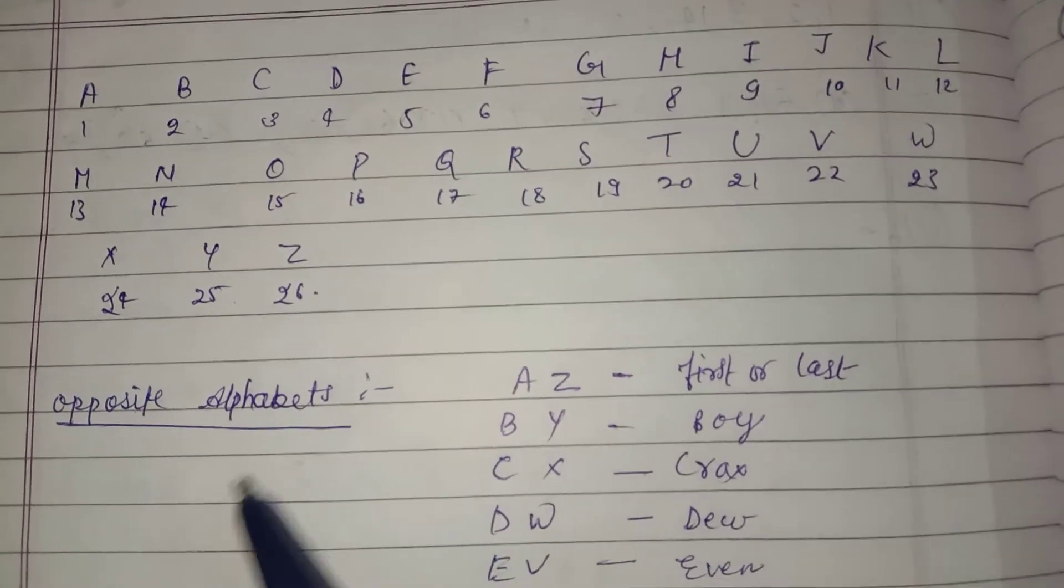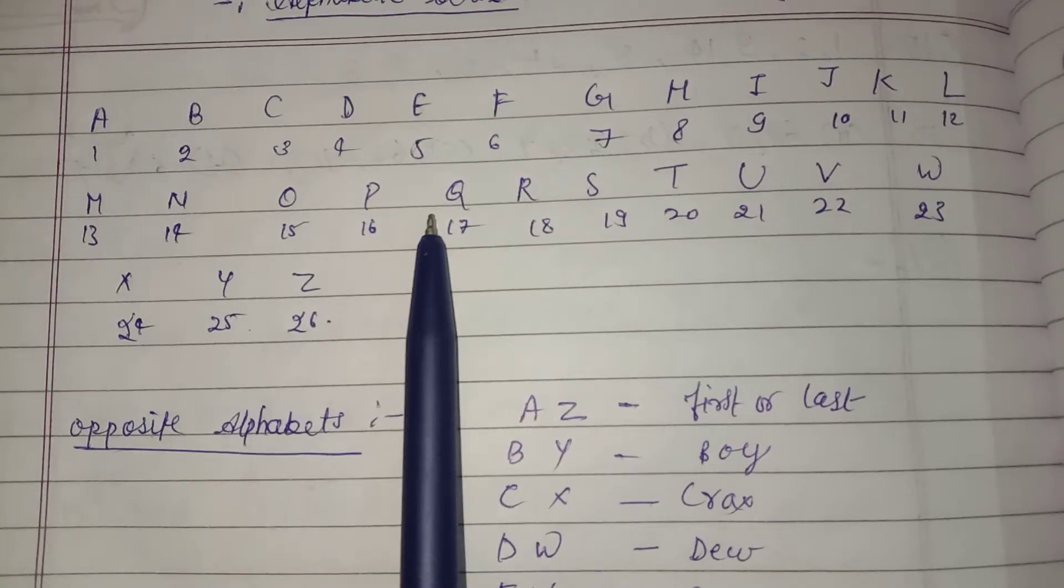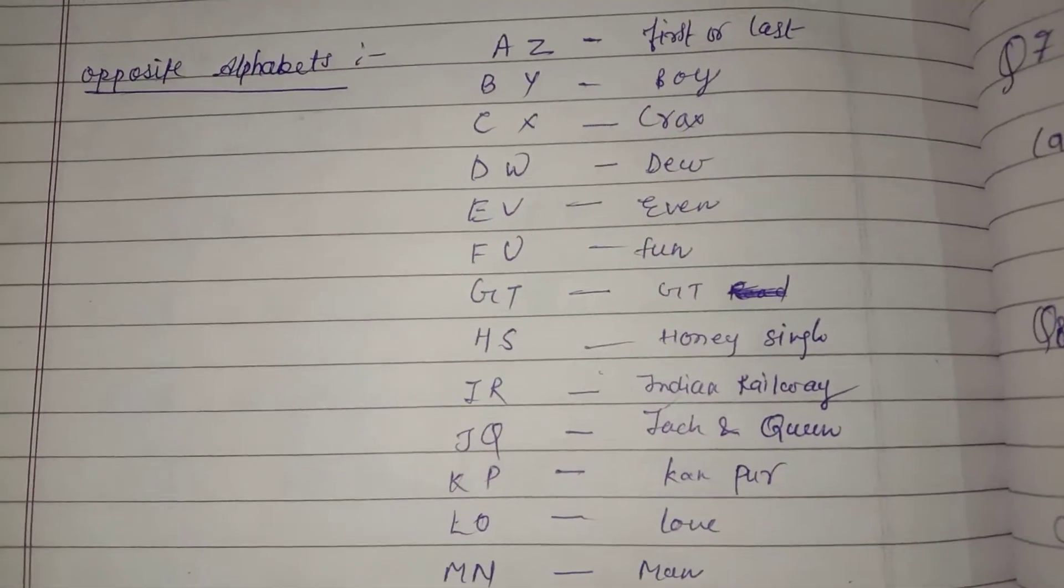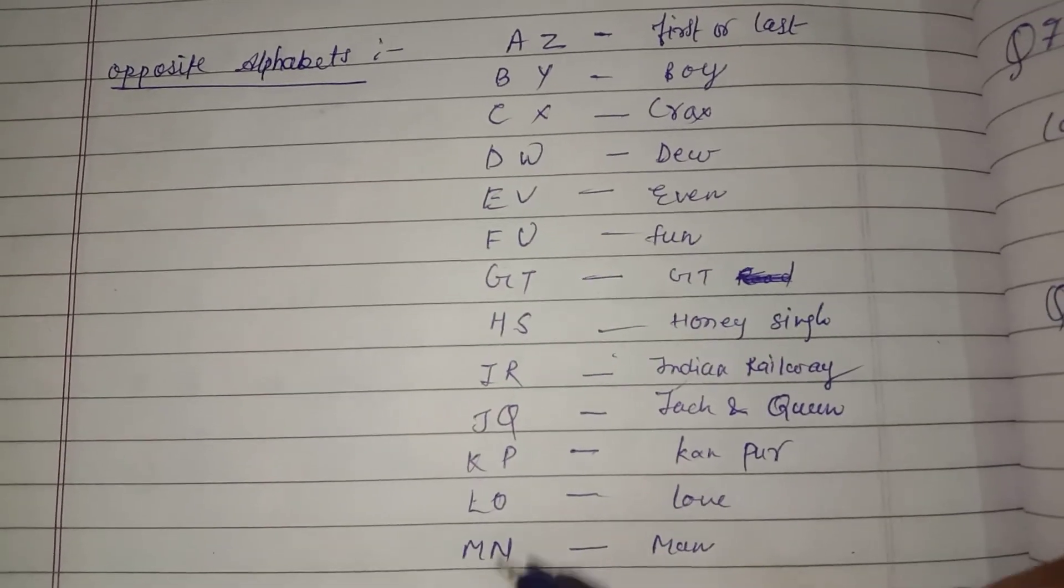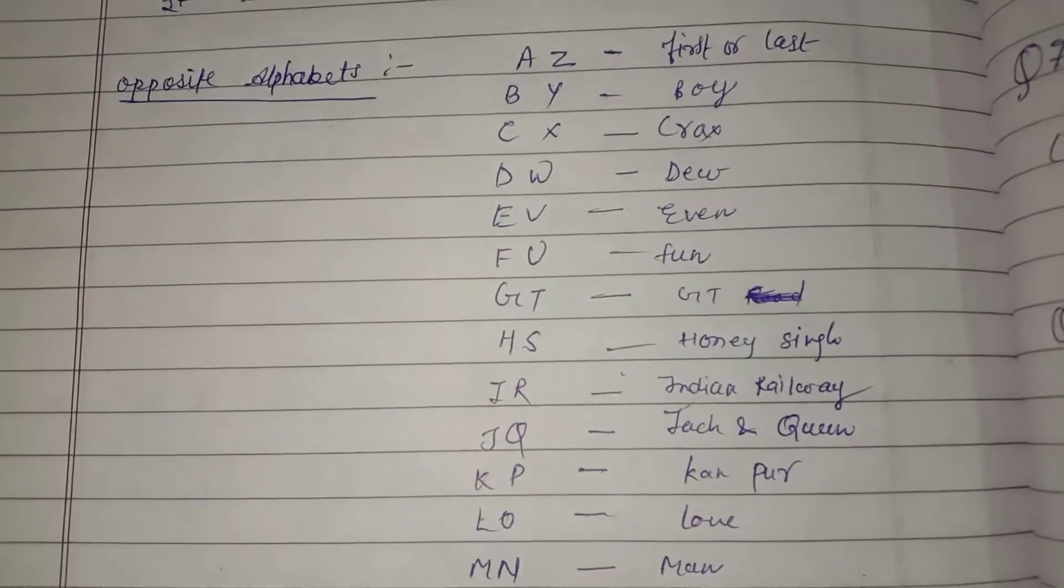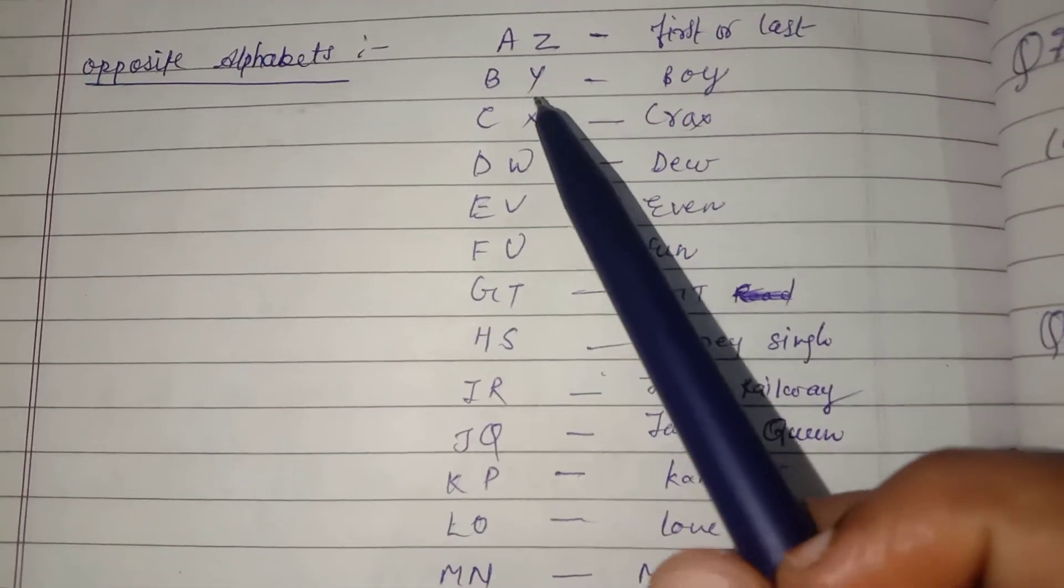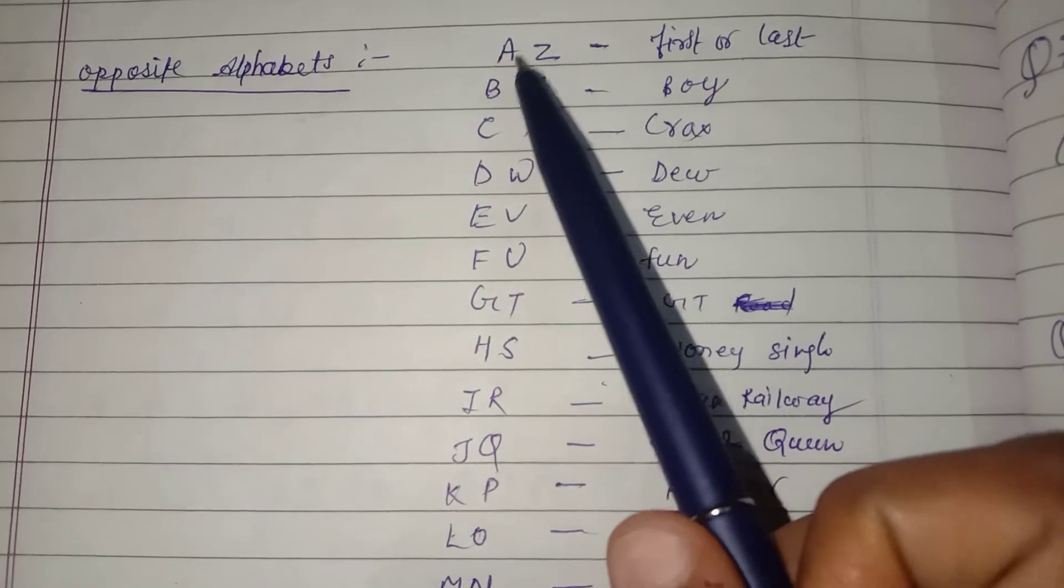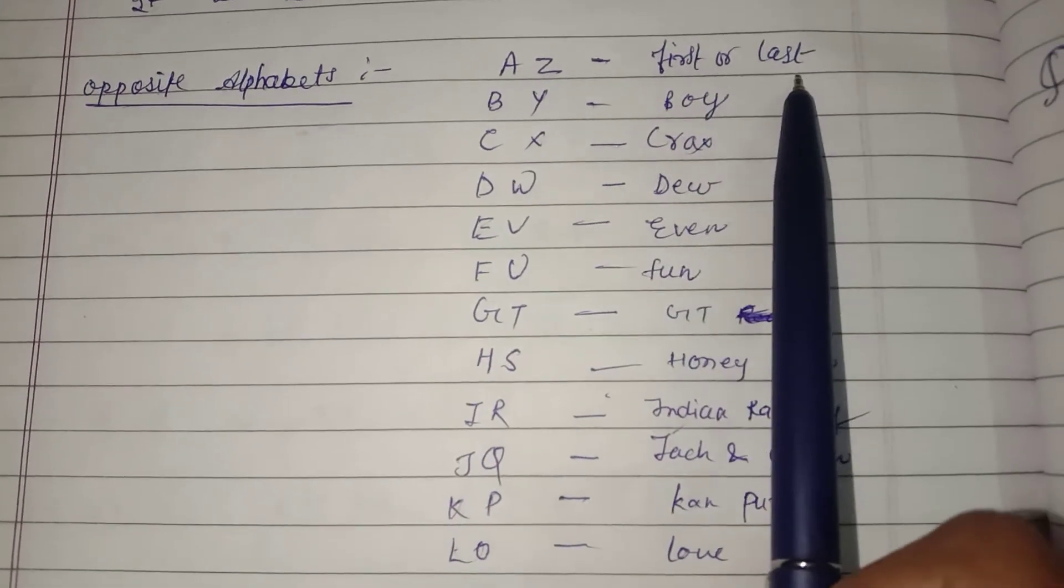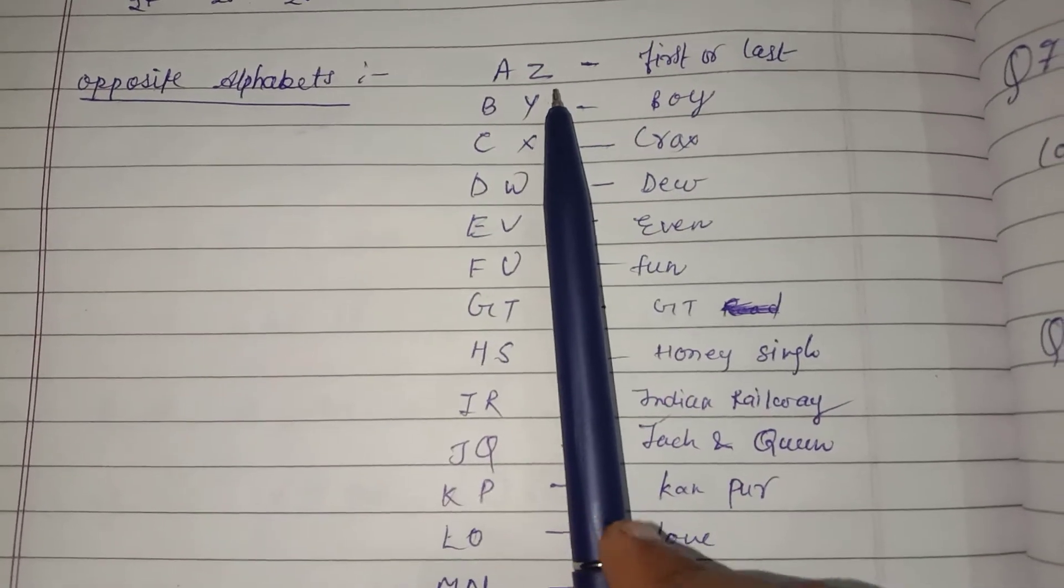I will show you a way to find opposites. What should you do for opposite? First, you have 26 letters. You can write A to M and then write N to Z. Then we will see that if you have a question about A's opposite, then what is Z? This is the first and last concept. You should know that A's opposite is Z.